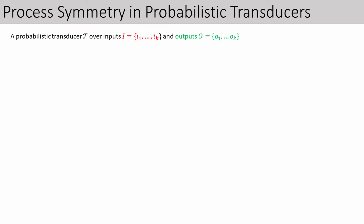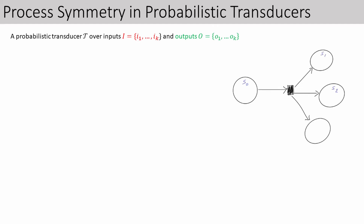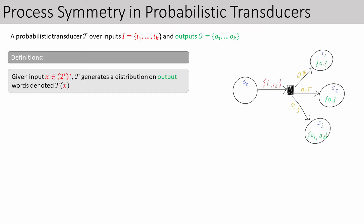Let's formalize that. Like our arbiter from before, we consider probabilistic transducers. These are finite state machines with probabilistic transitions, such that in each state, when they read an input letter, they probabilistically choose a successor state and respond with the output labeled on that state. For example, in state S0, if we see the input letter I1, I2, we can go to state S1 with probability 0.2 outputting O1, or to S2 with probability 0.5 outputting O1, or to S3 with probability 0.3 outputting O1, O3. Thus, given an input word X, a probabilistic transducer generates a distribution of output words, denoted T·X.